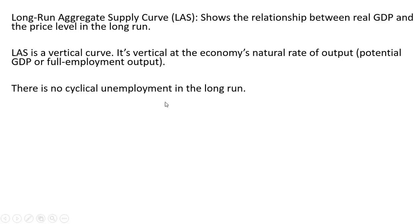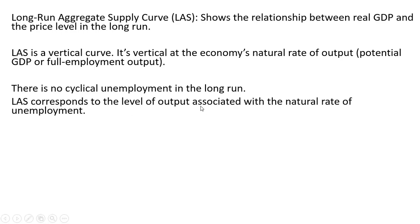There's no cyclical unemployment in the long run. So the long-run aggregate supply curve corresponds to the level of output associated with the natural rate of unemployment. The natural rate of unemployment is just frictional plus structural unemployment.